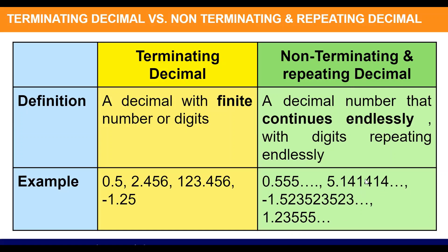Kung napapansin natin, may mga digit tayong inuulit-ulit. Walang katapusang ulit yung digits — that's why it is called non-terminating or repeating decimal.